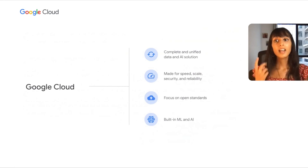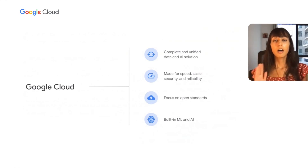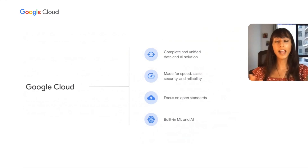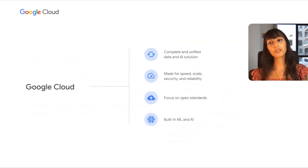The second reason why customers pick Google Cloud is because we were designed for speed, scale, security, and reliability for any size organization. Many of our customers have adopted our leading products such as BigQuery, Spanner, Looker, and our AI solutions to achieve lower TCO and improve productivity for their data-driven applications.